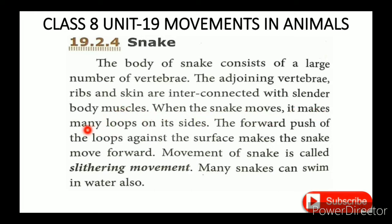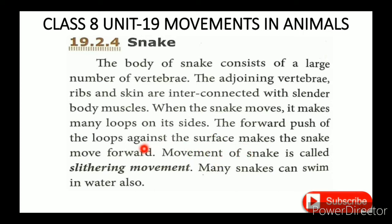When the snake moves, it makes many loops on its sides. The forward push of the loops against the surface makes the snake move forward. The movement of the snake is called slithering movement.